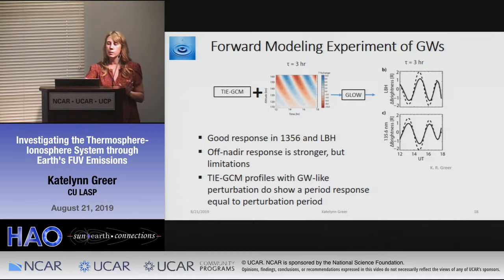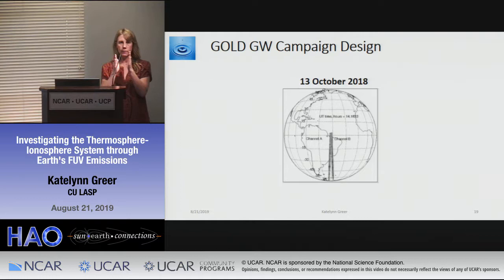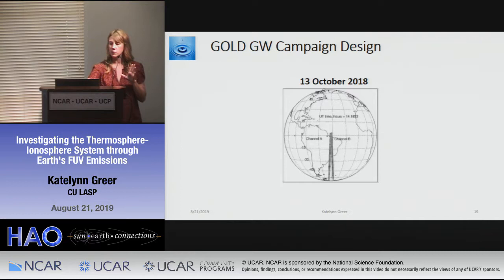The solid lines in the plots show nadir viewing; dashed lines show off-nadir views. Even though the off-nadir view has a stronger response, you're looking through more atmosphere and possibly through multiple gravity waves, so interpretation requires care. This gave us confidence that we might be able to see something, and on October 13th we performed a special campaign where we parked channel A and channel B in the center of the disk and stared for about six hours, hoping to detect convective gravity waves.